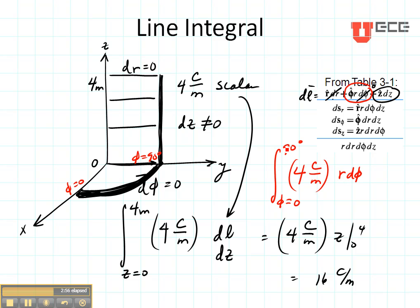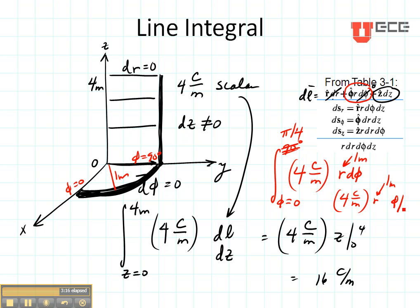Actually, instead of 90 degrees, let me use π/4. I need an R value — let's say R is one meter. So I get four coulombs per meter times R (one meter) times φ evaluated from zero to π/4, which gives four times π/4 coulombs, or π coulombs for this little piece of line.